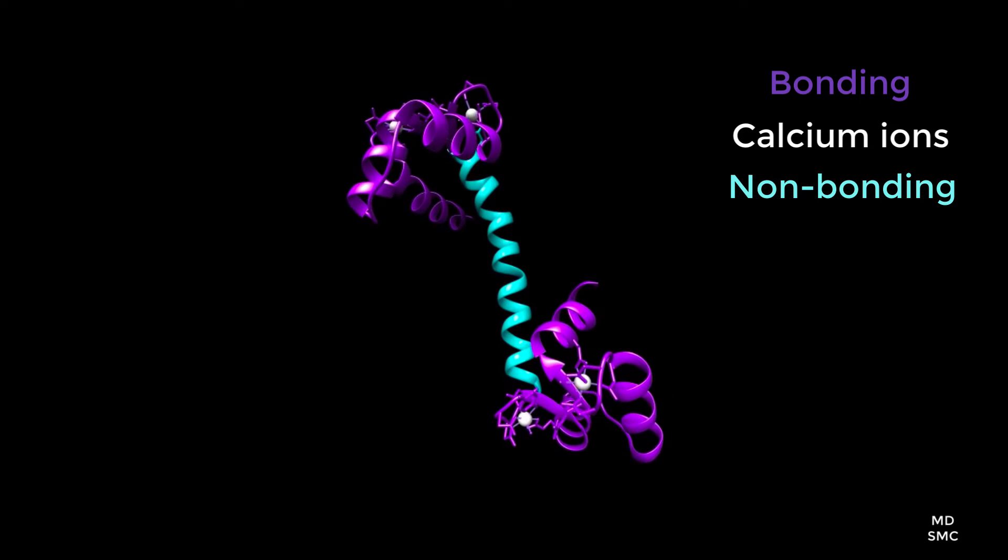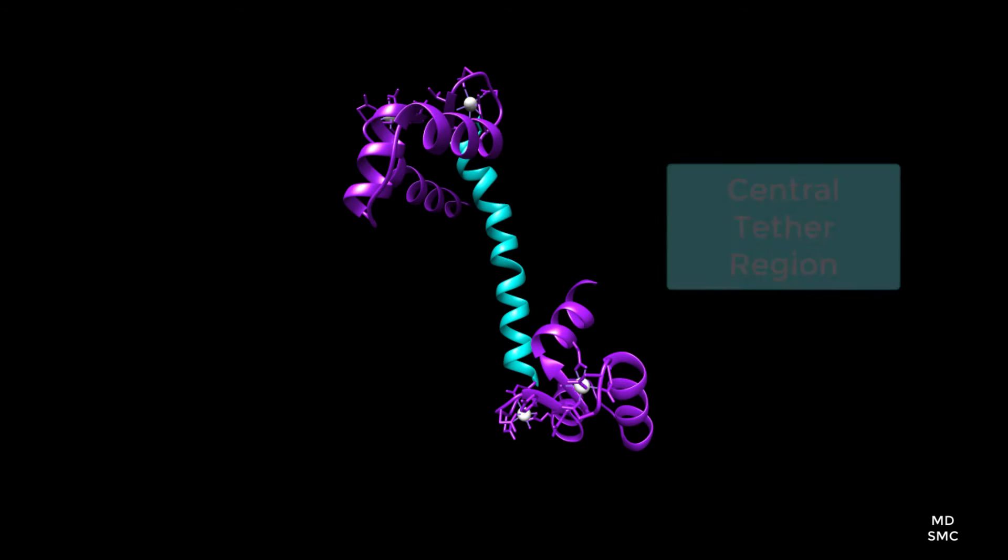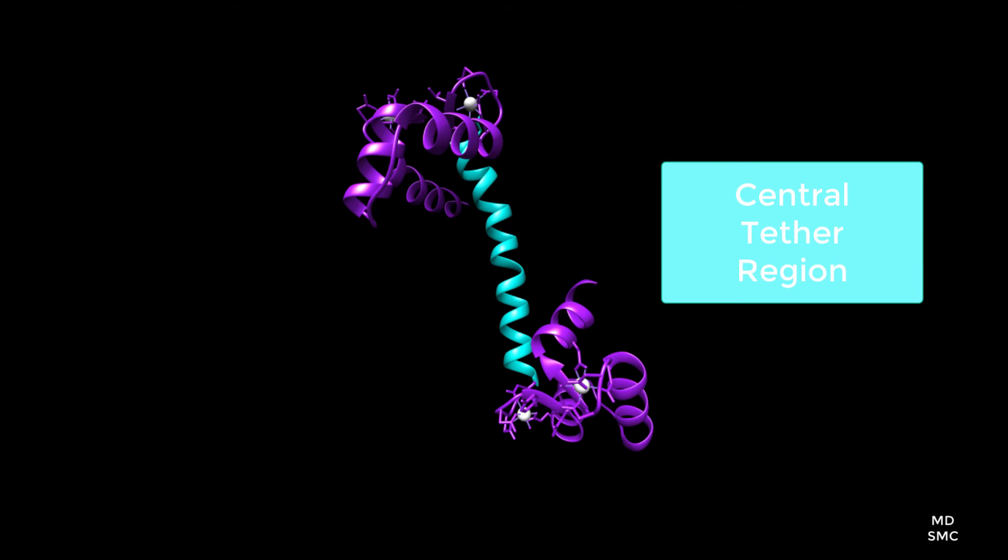As mentioned before, this alpha helix is called the central tether region. The flexibility of this alpha helix allows the polypeptide to bind to over 100 target proteins, but this affinity for protein-protein interaction hinges on the binding of calcium ions within the four domains.